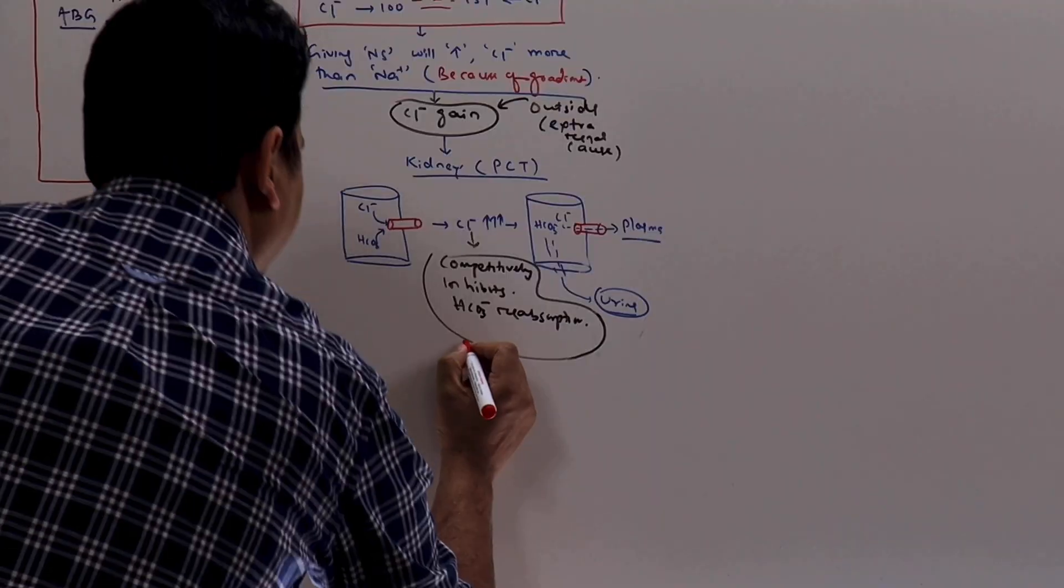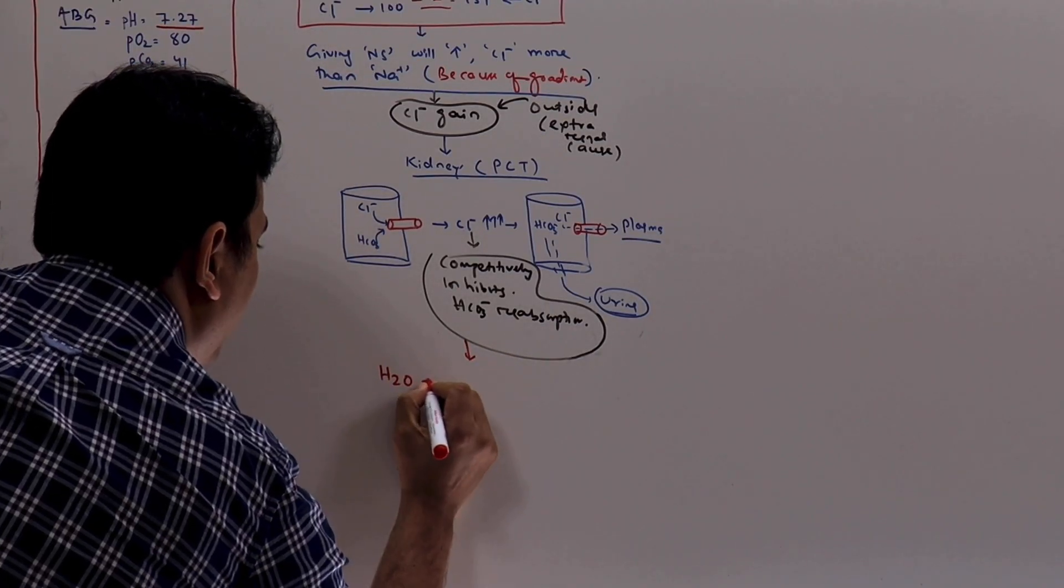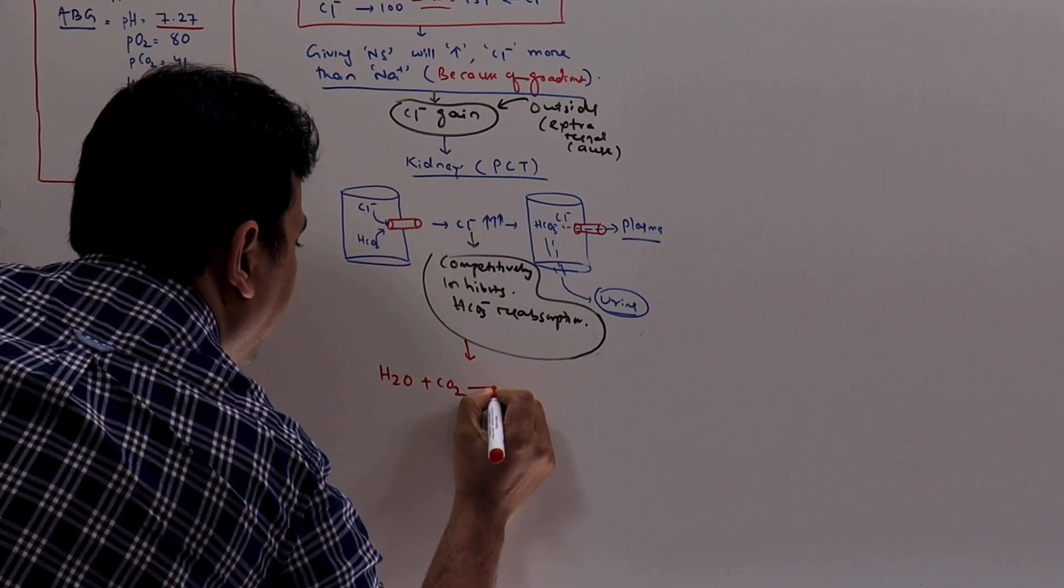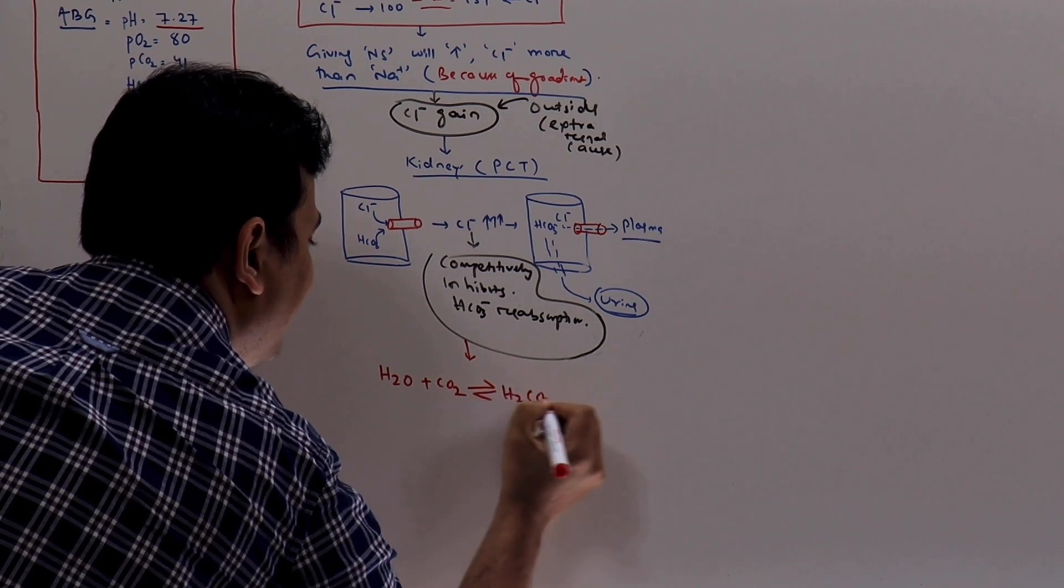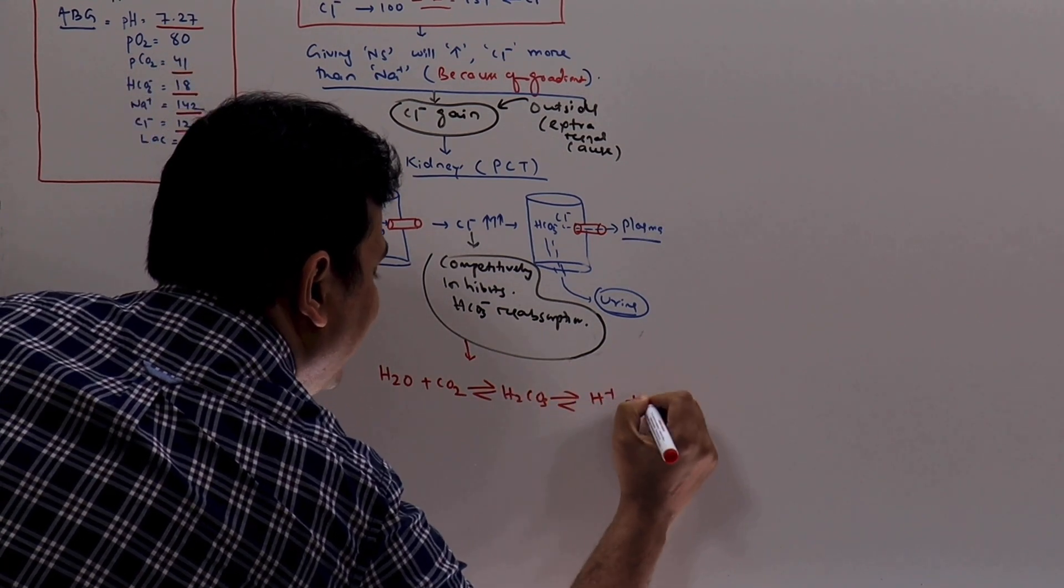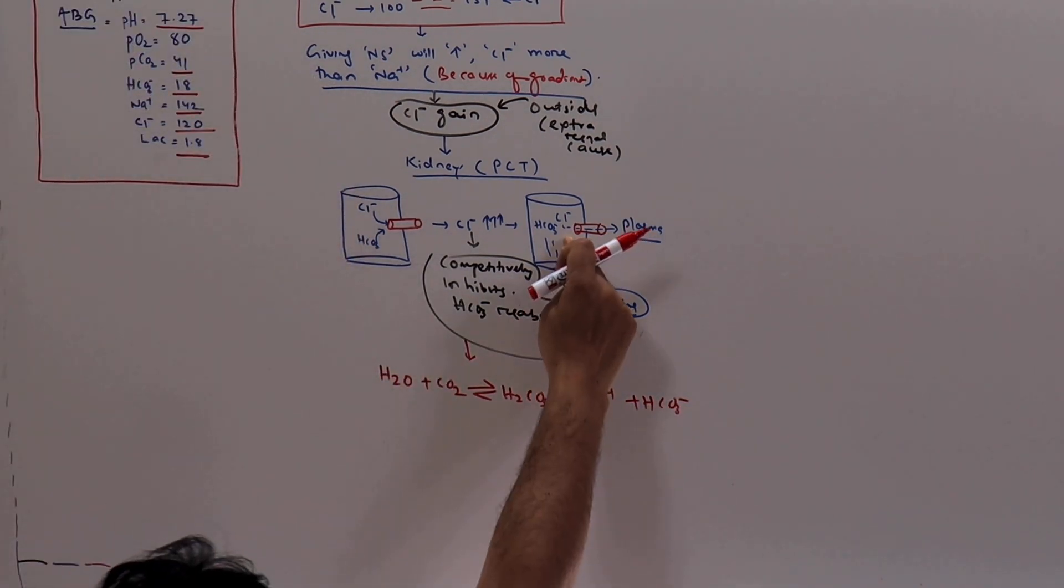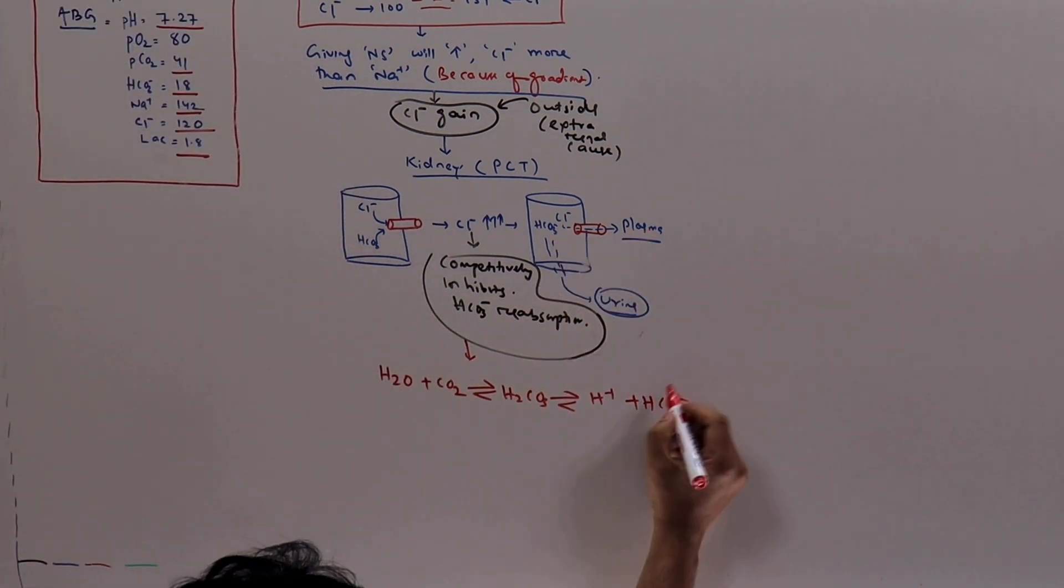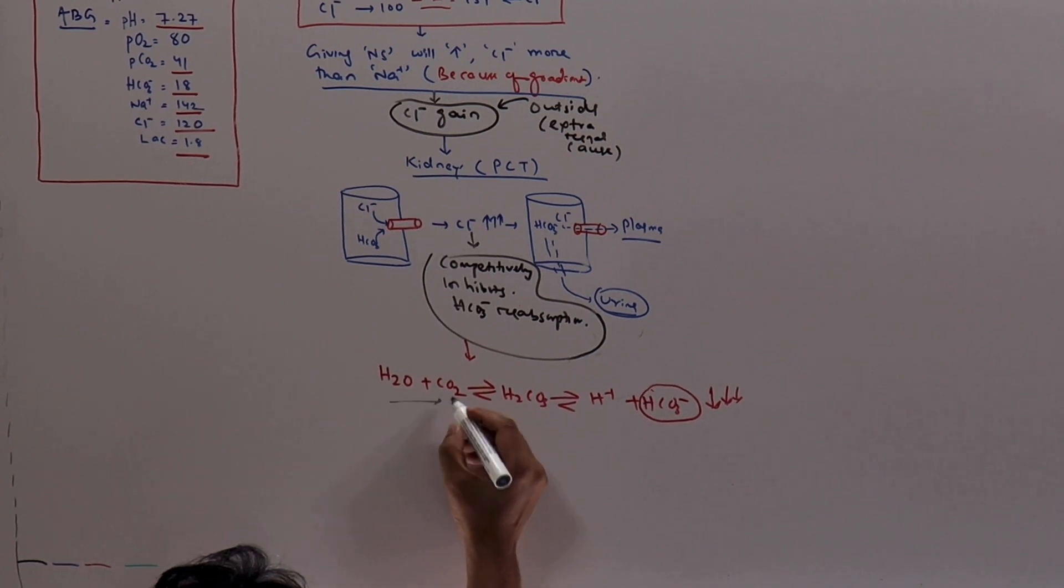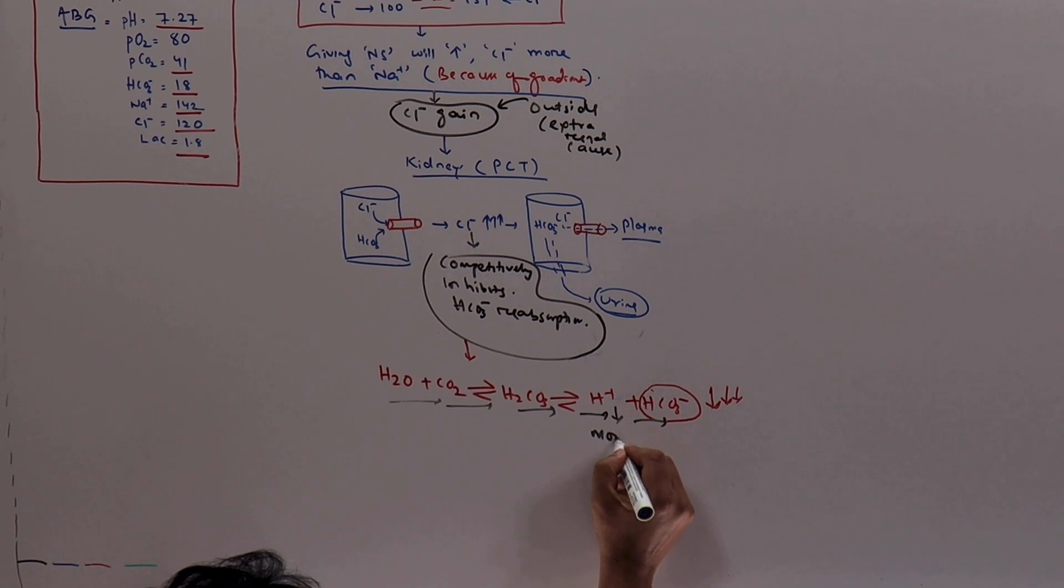Now coming to the equation. H2O plus CO2 is equal to H2CO3, H plus plus HCO3 minus. You can see here, the bicarbonate gets wasted in the urine, so the bicarbonate is decreasing. Whenever the bicarbonate is decreasing, the whole equation is shifted in this direction, producing more H plus ion. And the more H plus ion translates to acidosis.